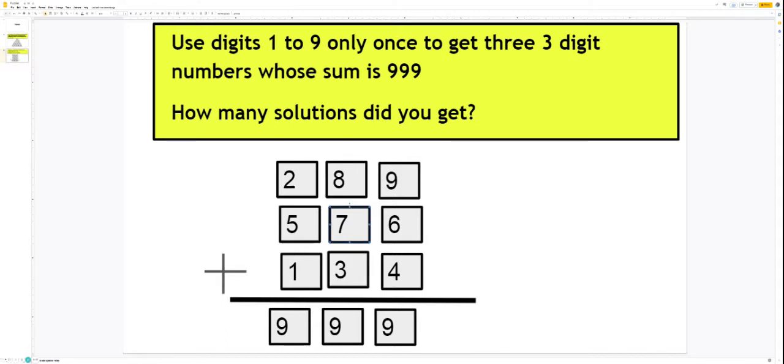So look for other possibilities and write down your answer in the comment box. You need to use the digits 1 to 9 once to get three 3-digit numbers whose sum is 999. Try to find out as many solutions as you can. Enjoy learning mathematics.